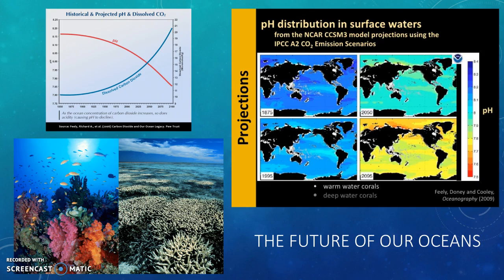Since the Industrial Revolution, the pH of the ocean waters have fallen by 0.1 pH units, which is an equivalent to a 30% increase in acidity. As carbon emissions increase, scientists predict the ocean will continue to absorb more CO2 and continue to become more acidic. Estimates of future predictions show that the waters could be nearly 150% more acidic by the end of this century.